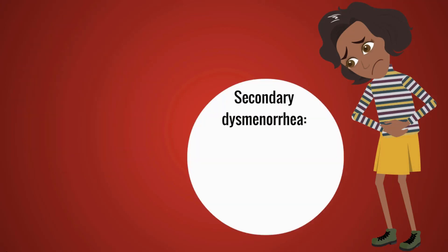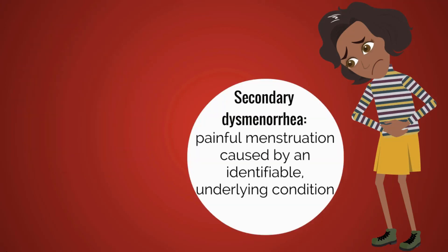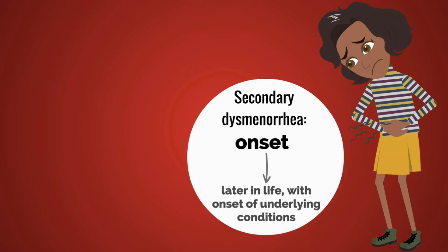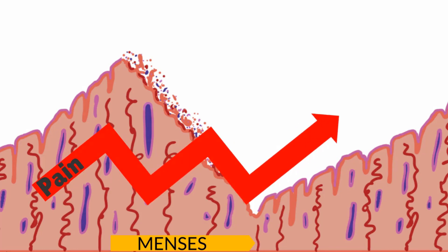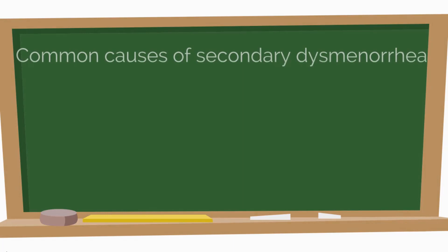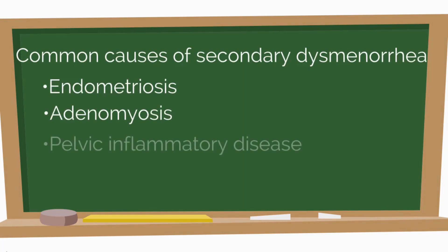Conversely, secondary dysmenorrhea is painful menstruation caused by an identifiable underlying condition of the reproductive system. Pain onset may be later in life with the onset of the underlying condition. Also, pain is often not as directly associated in timing with menses as in primary dysmenorrhea. Pain may begin a few days before menses, may worsen as menses continues, and may not cease after it ends. Common causes of secondary dysmenorrhea include endometriosis, adenomyosis, pelvic inflammatory disease, and uterine fibroids.